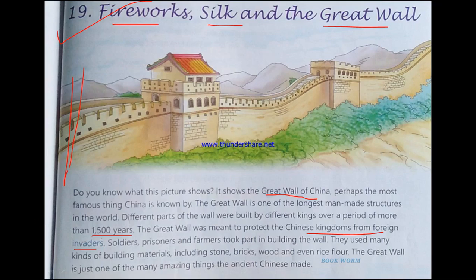Who was involved in building this wall? Soldiers, prisoners and farmers. What were the materials used? Stones, bricks, wood and even rice flour. This is one of the amazing structures built by the Chinese. There are many other inventions of the Chinese which we are going to read about. So let us continue.